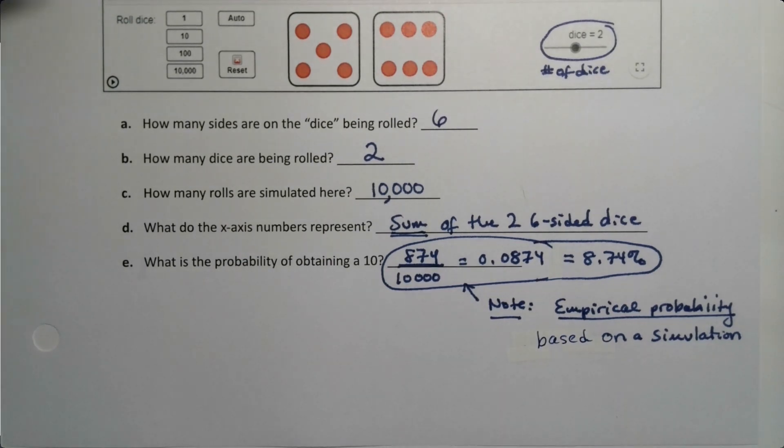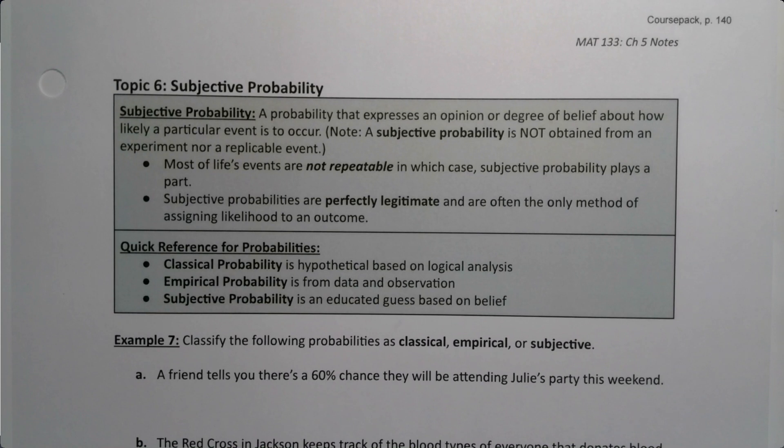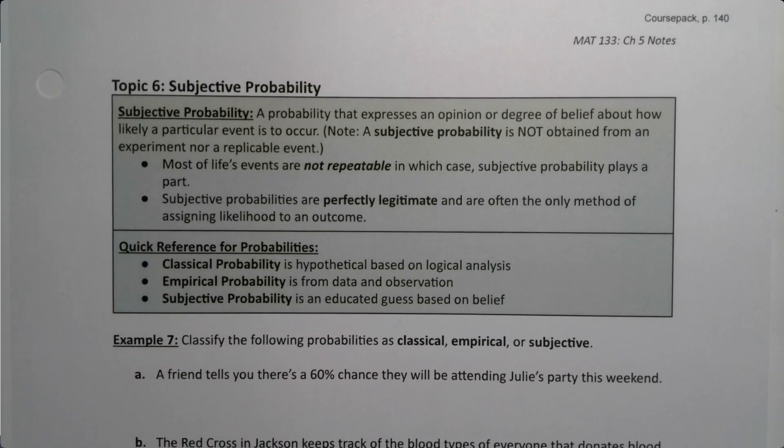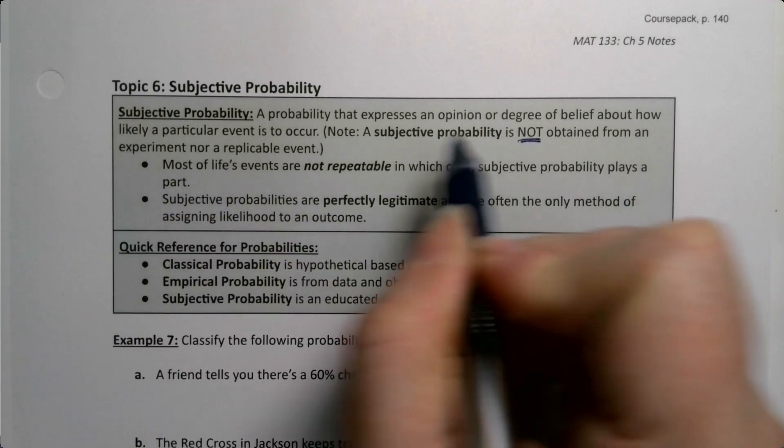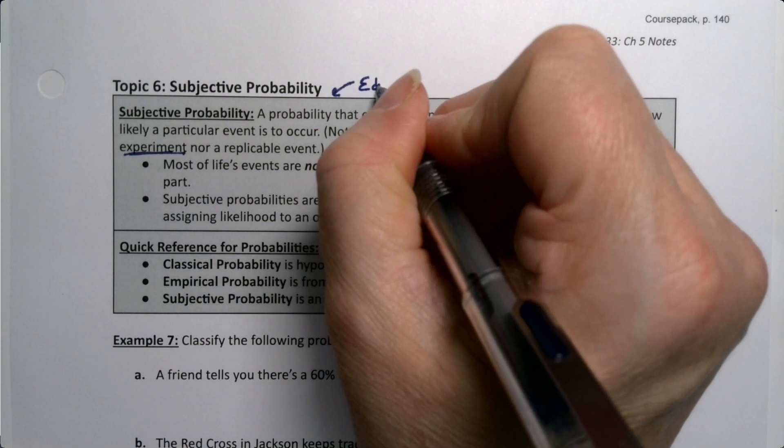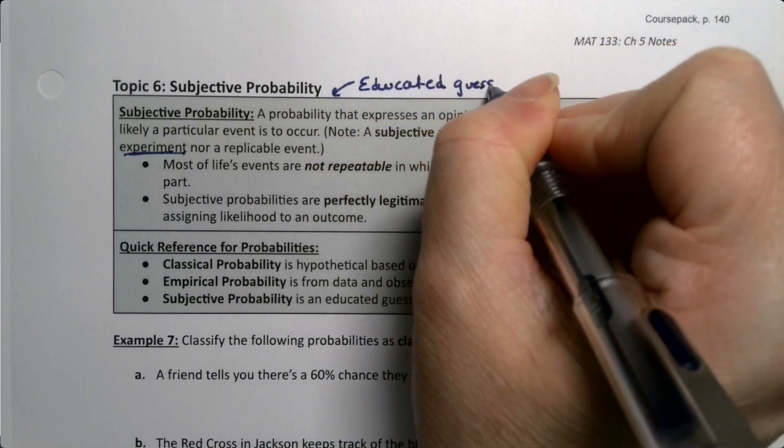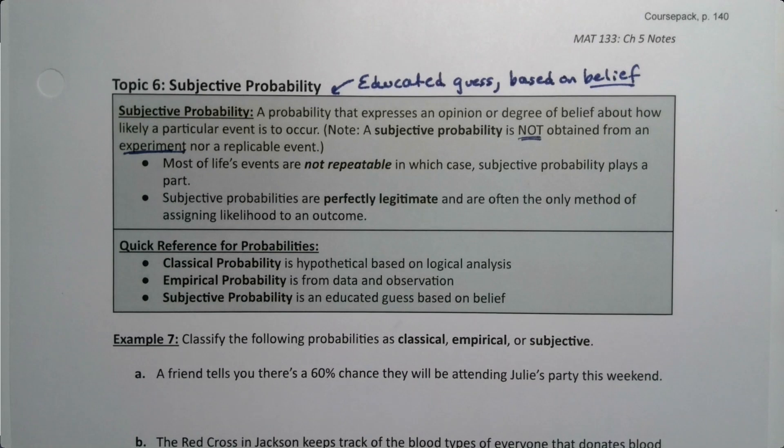So we can imagine that now we need to determine what makes the different kinds of probabilities what they are. And there actually is one other type of probability that we haven't gone over. Simulation isn't its own type of probability. It's just a way to get the empirical results that we need. But there is another kind of probability, which is the subjective probability. It's a probability that expresses an opinion of degree of belief about how likely something is to occur, but it's not based on data. That's the key. It's based on an educated guess. So a subjective probability is not obtained from an experiment. It's not empirical. It's not a replicable event. So this is an educated guess based on belief.